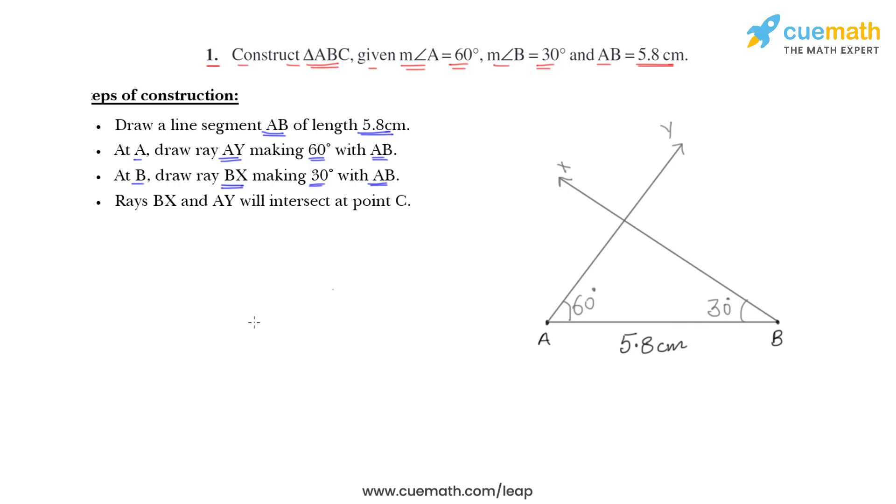Next step, ray Bx and Ay will intersect at point C. So, they will intersect at point C. So, we got our triangle. Triangle ABC is now completed. AB is 5.8 centimeters. Angle A is 60 degrees and angle B is 30 degrees. This triangle ABC is now completed and this is the required triangle.